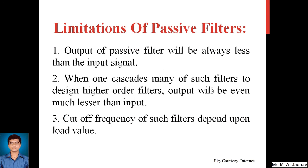Before that, we will go through the different limitations of passive filters. We already know that passive filters are made up of components like resistors, inductors, and capacitors. The main difference between passive and active filters is that active filters are made up of op-amps or transistors with resistors and capacitors — we use active elements in active filters.